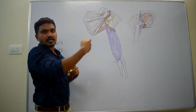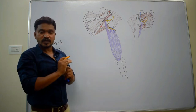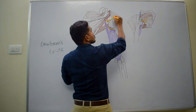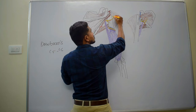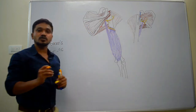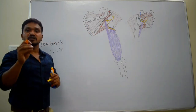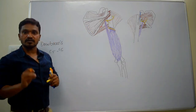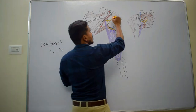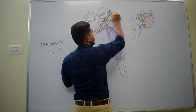The anterior division runs underneath the deltoid muscle and supplies to the deltoid muscle and also to the skin over the antero-inferior part of the deltoid muscle.